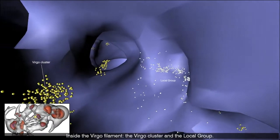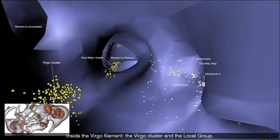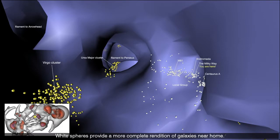Inside the Virgo filament, the Virgo cluster and the local group. White spheres provide a more complete rendition of galaxies near home.